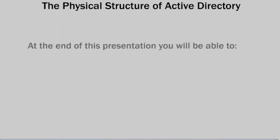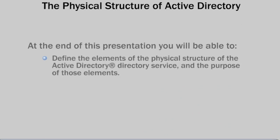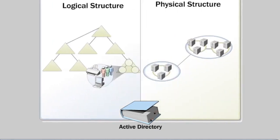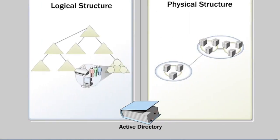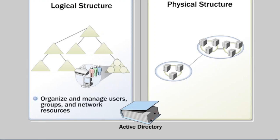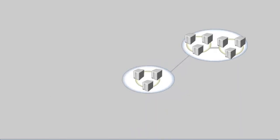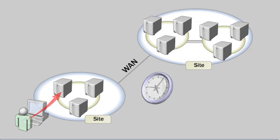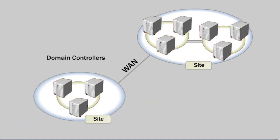At the end of this presentation, you will be able to define the elements of the physical structure of the Active Directory directory service and the purpose of those elements, and discuss how the logical and physical structures of Active Directory work together to meet organizational needs. In Active Directory, the physical structure is separate and distinct from the logical structure. The logical structure enables you to organize and manage users, groups, and network resources, while the physical structure enables you to optimize network traffic. The physical structure defines when and where replication and logon traffic occur. The elements of the physical structure are domain controllers and sites.